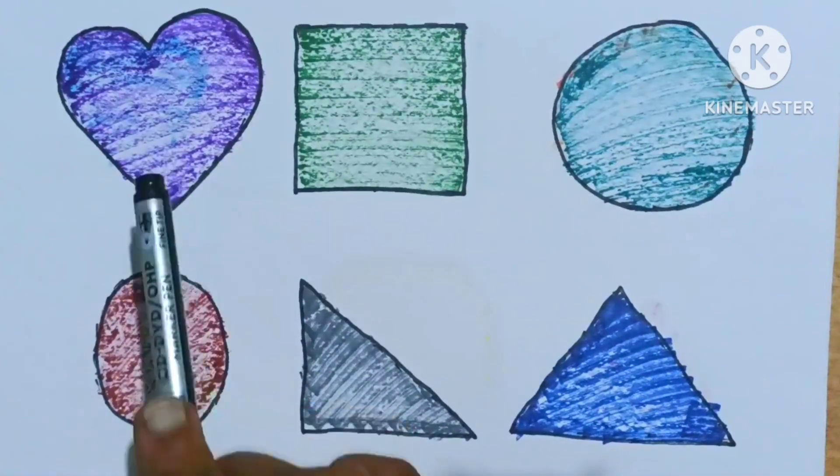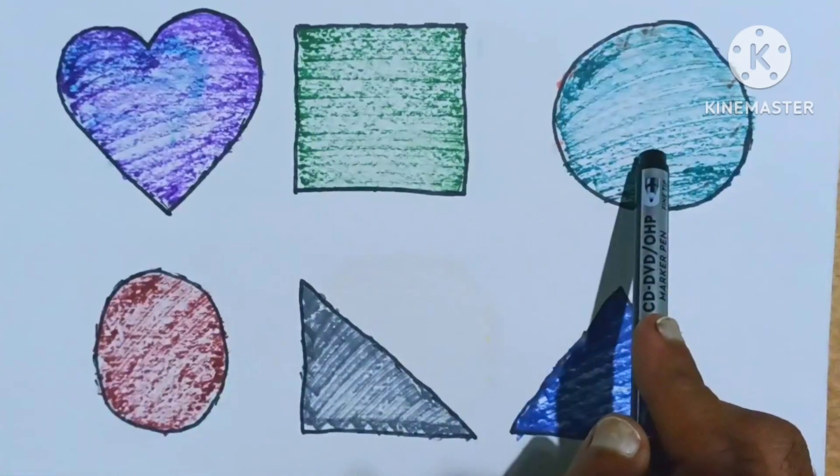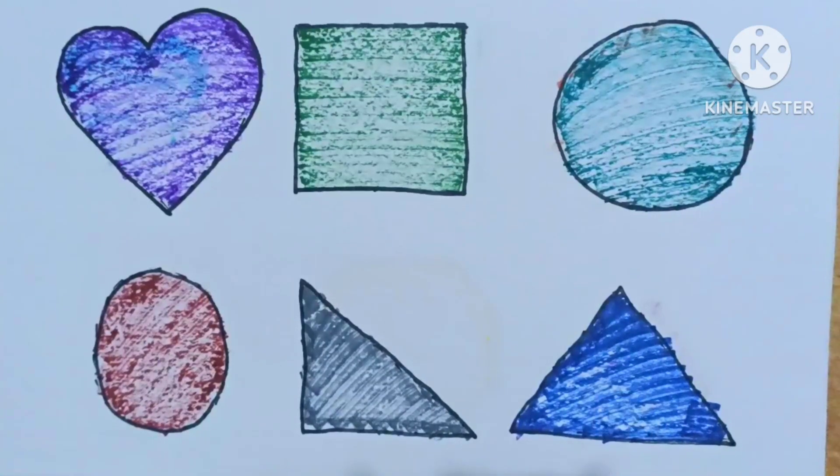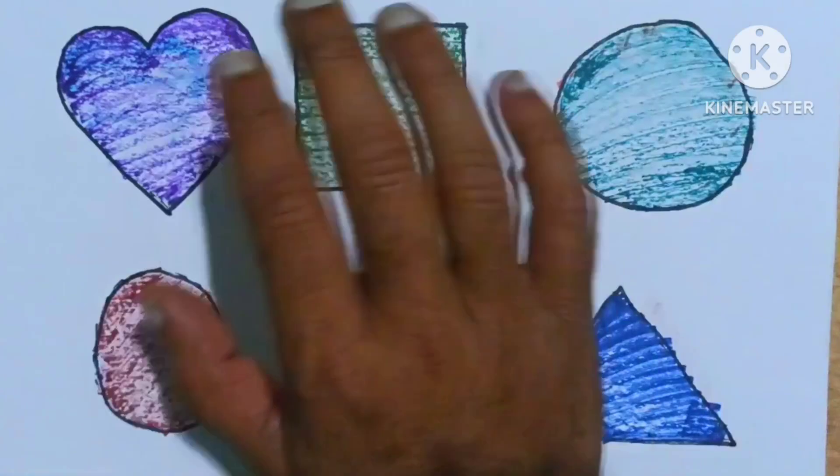Heart, square, circle, oval, right triangle, triangle. Thank you for watching. Don't forget to subscribe. See you next video, bye bye.